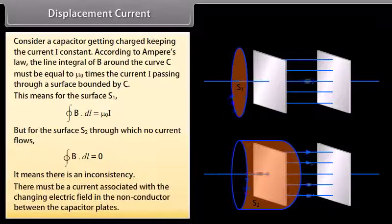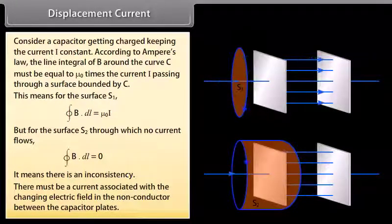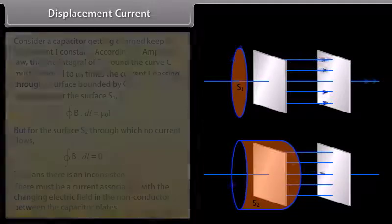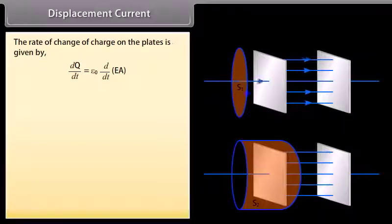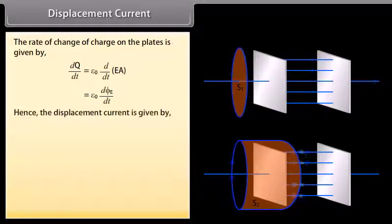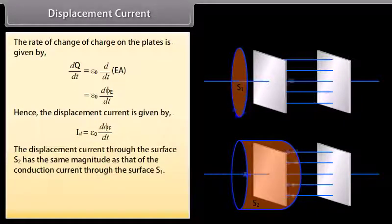There must be a current associated with the changing electric field in the non-conductor between the capacitor plates. The rate of change of charge on the plates is given by epsilon not D upon DT of EA, which is equal to epsilon not D phi E by DT. Hence the displacement current is given by I D is equal to epsilon not D phi E by DT. The displacement current through the surface S2 has the same magnitude as that of the conduction current through the surface S1.